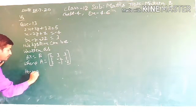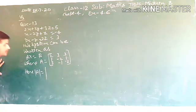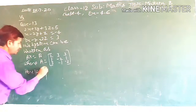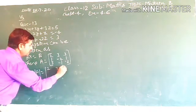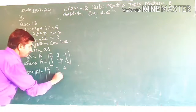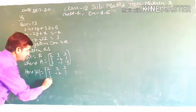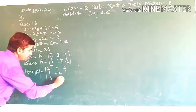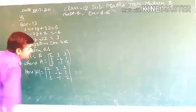The determinant D is given by expanding the matrix: 2, 3, 3, 1, minus 2, 1, 3, minus 1, and minus 2.